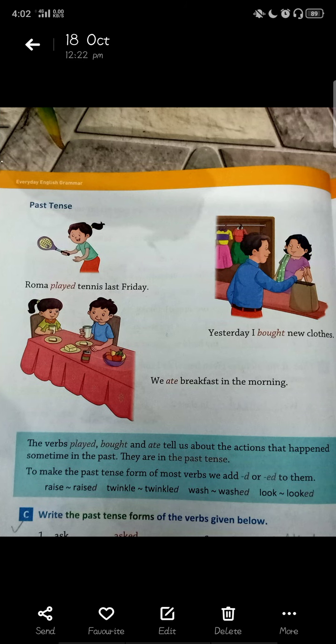Now here are some examples for the past tense. Roma played tennis last Friday — Roma ne tennis last Friday khela tha. Yesterday I bought new clothes — 'bought' used for past. We ate breakfast in the morning — we usually say 'I eat' but here 'I ate' is the past tense form of eat.